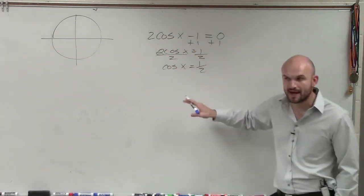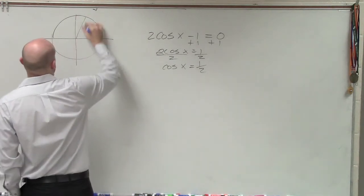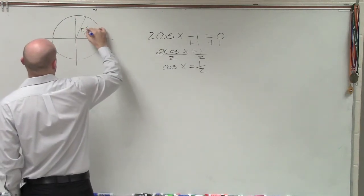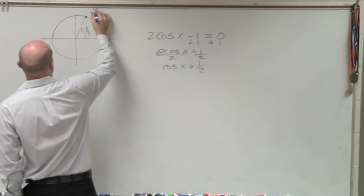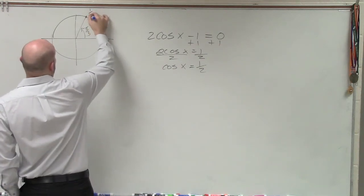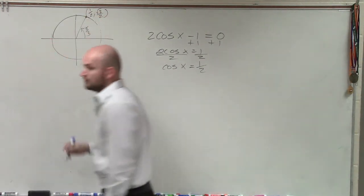Well, cosine equals 1 half. We, hopefully, know that that is going to be the angle pi over 3, because that point is 1 half comma square root of 3 over 2.